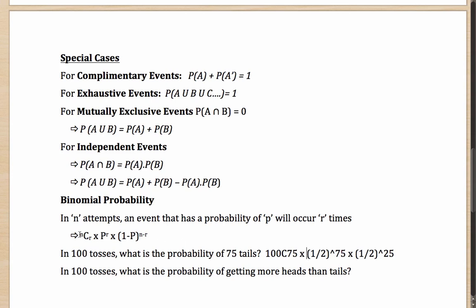The general binomial formula: in N attempts, the probability that an event with probability P will occur R times is NCR multiplied by P to the power R multiplied by (1 minus P) to the power of (N minus R). You select R attempts from N in NCR ways; P to the power R is the probability of happening R times; and (1 minus P) to the power (N minus R) ensures the event does not happen in the remaining attempts.